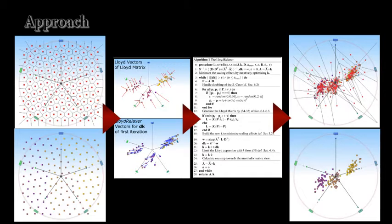Here we can see on the right our Lloyd Relaxation action for the IRIS dataset from the UCI repository.